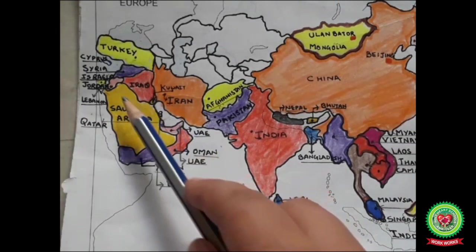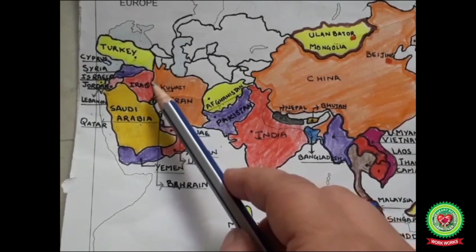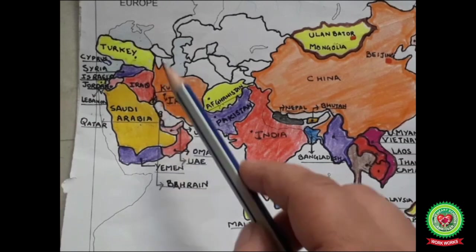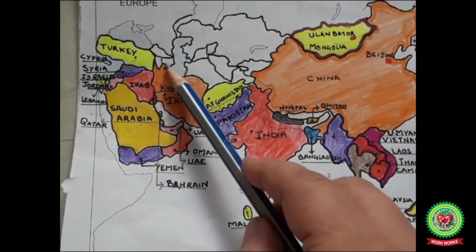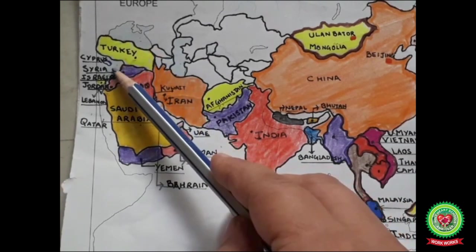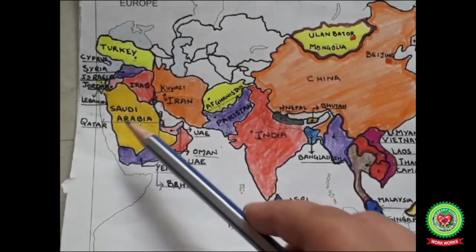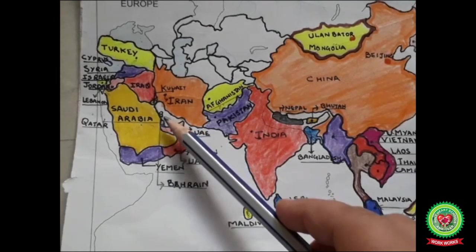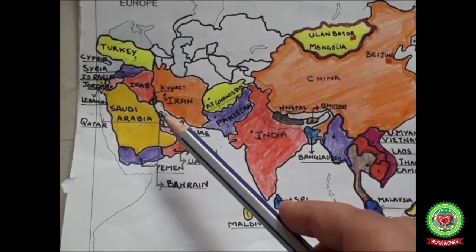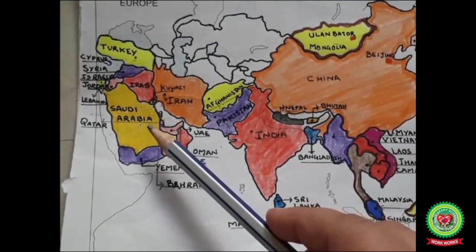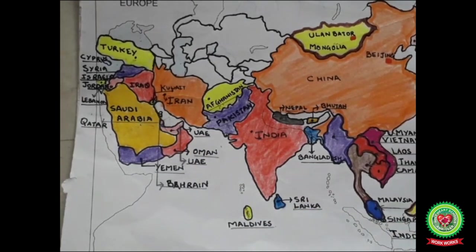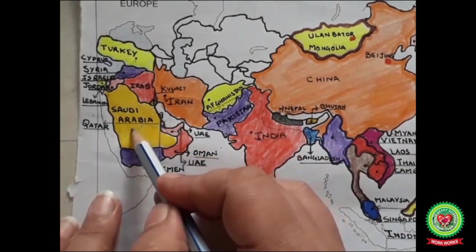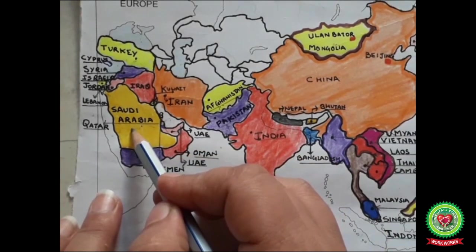West Asia refers to the region in the westernmost part of Asia. It is surrounded by seven different seas which include the Caspian Sea, Black Sea, Mediterranean Sea, Red Sea, Arabian Sea, and Persian Gulf. Twenty countries are located fully or partially in Western Asia, out of which 13 are part of the Arab world.